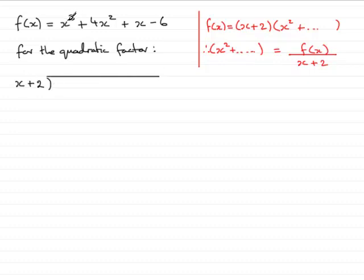We have (x + 2) into f(x), which is x³ + 4x² + x - 6.